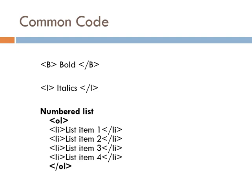If we look at some more common pieces of code, you'll recognize things like bold — that's wicket 'b' wicket, closed with wicket backslash 'b' wicket. Italics uses 'i' as its code designator. This would be the code used for a numbered list. In most editors, much like in word processing, you select your text and click a button that applies the formatting you want — whether that's color, bold, or a list — and the editor is writing the code for your web page.